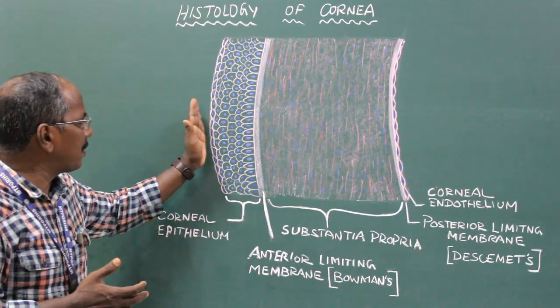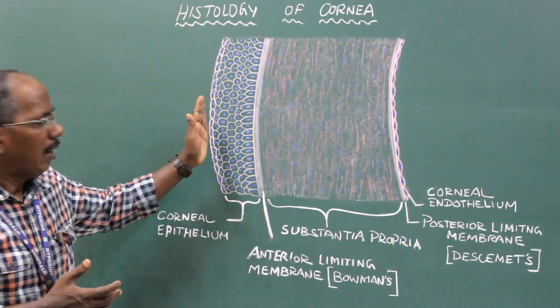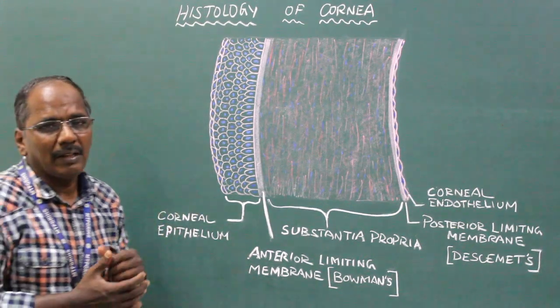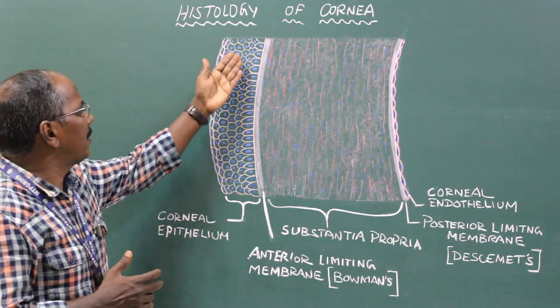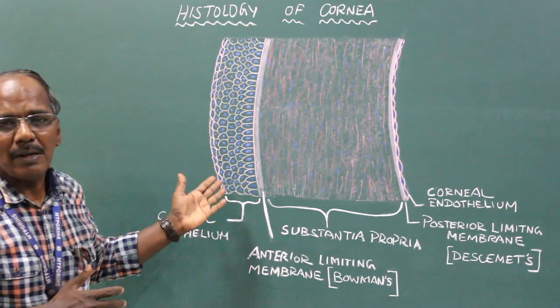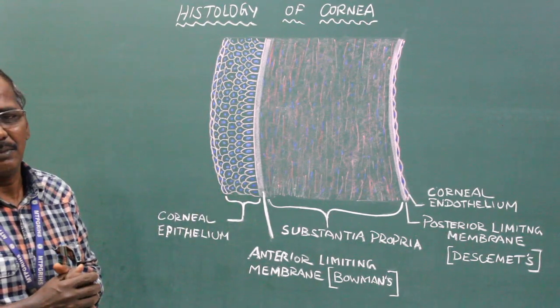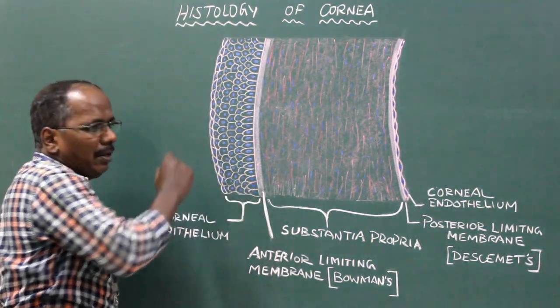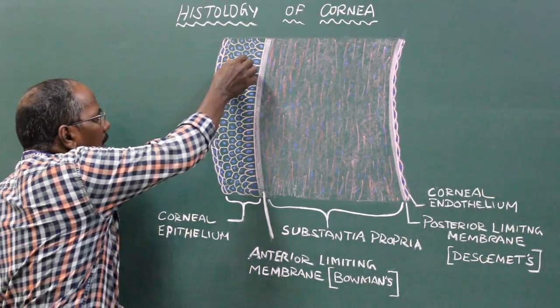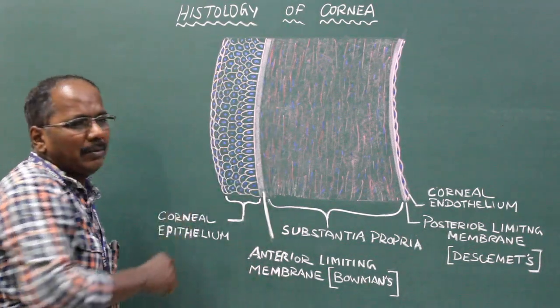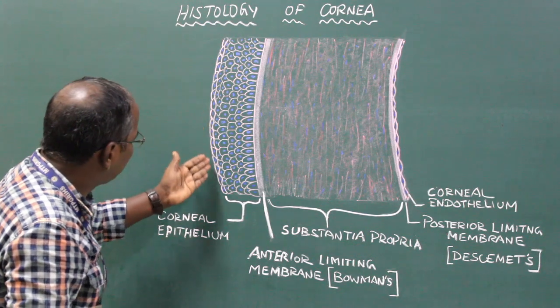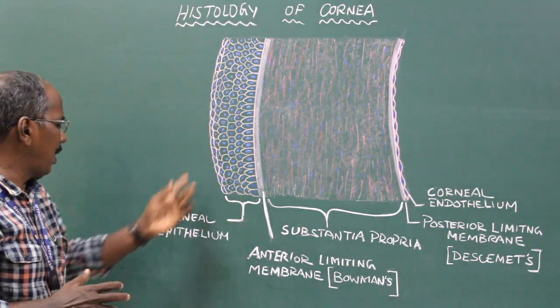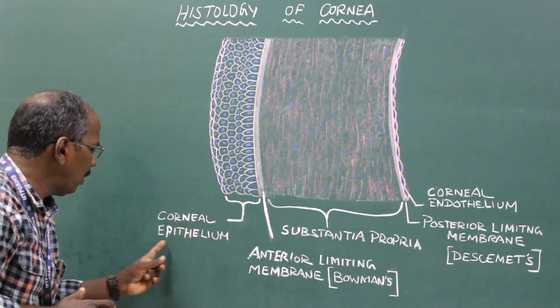The outermost layer of the cornea, or the anterior surface, is covered with non-keratinized stratified squamous epithelium. The cells of the deeper layer are columnar in shape, the middle layer are polyhedral in shape, and the superficial most cells are flat. It is also known as corneal epithelium.